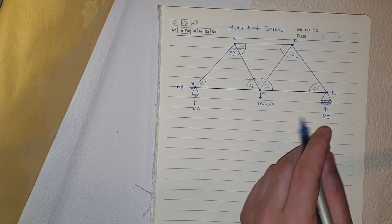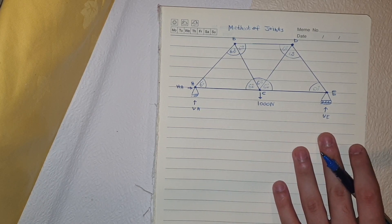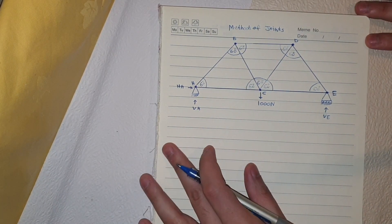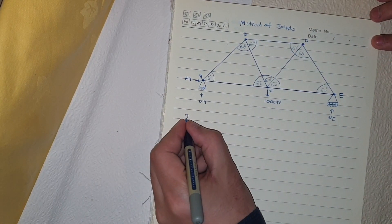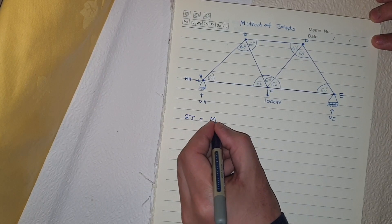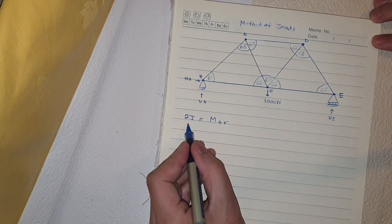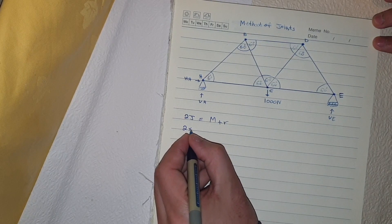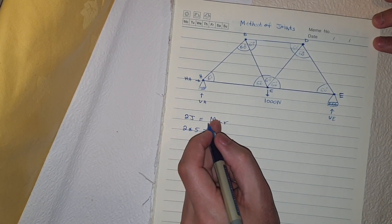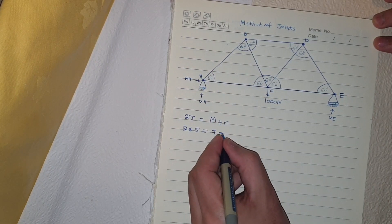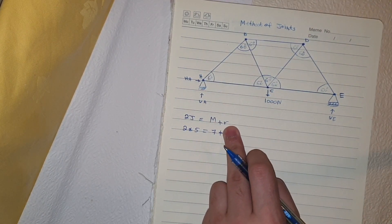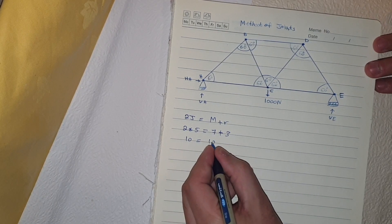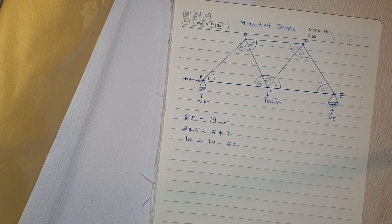Before we solve this problem we have to find out whether our truss is determinate or indeterminate. The formula for that is 2j = m + r, where j is the number of joints, m is the number of members, and r is the number of reactions. So two times five equals ten, and seven members plus three reactions also equals ten. Therefore our truss is statically determinate.